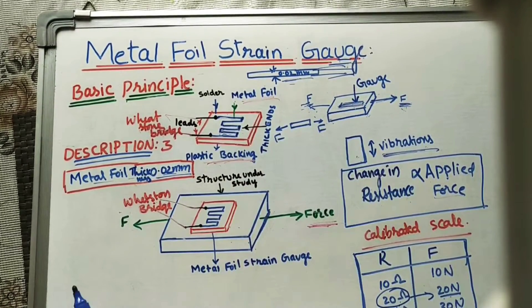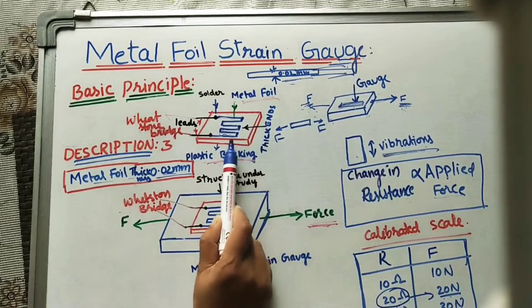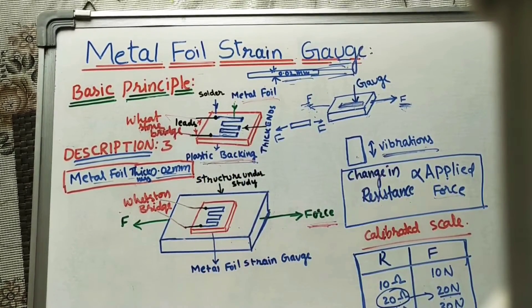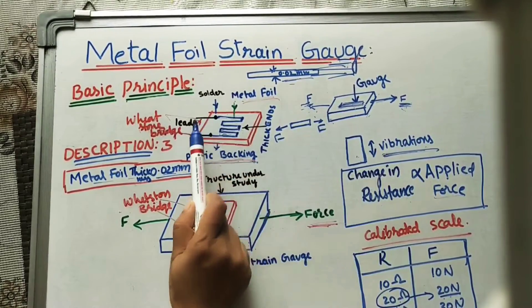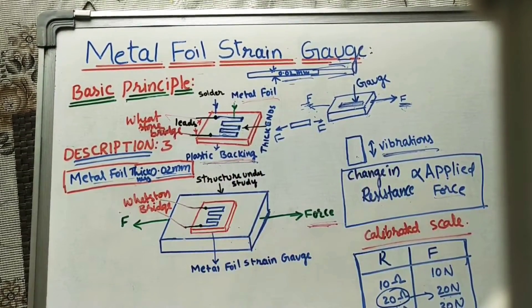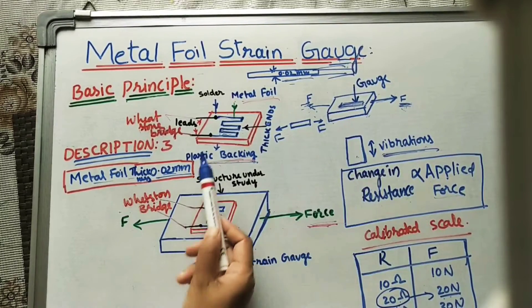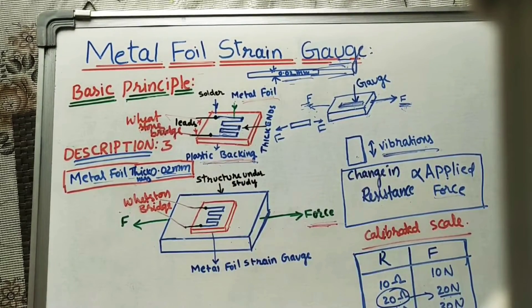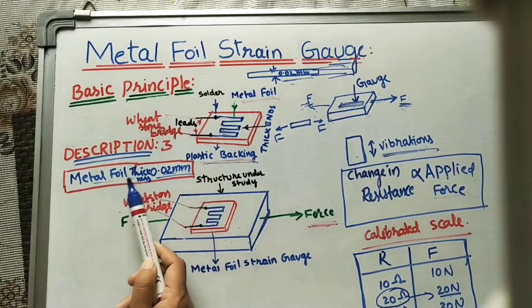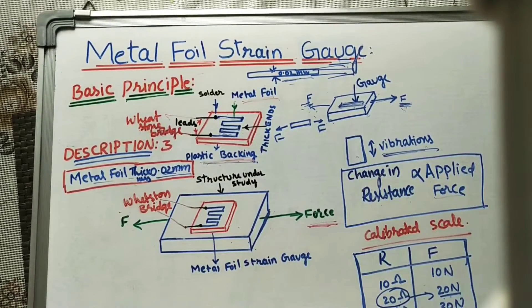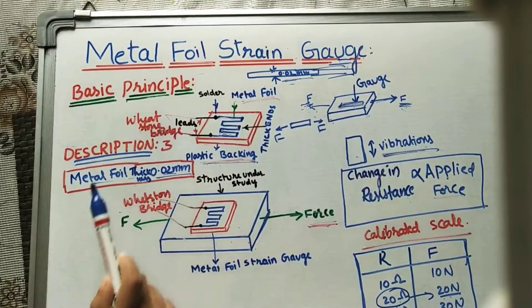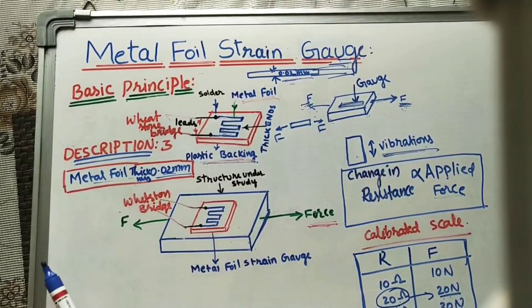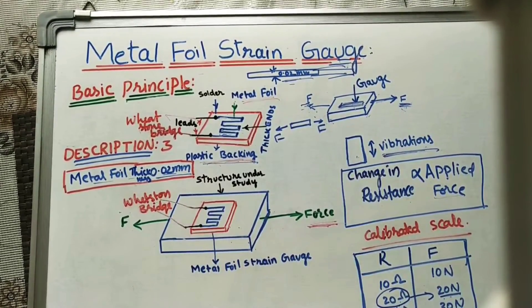The second part is that we stick this metal foil to one plate called the plastic backing — a plastic plate of minimum thickness. The third part is that at the two ends of the foil, by soldering, we keep the leads — the electric terminals — for connecting to the Wheatstone bridge. The Wheatstone bridge is a balanced resistance bridge, and we connect this foil to it with the help of the terminals.